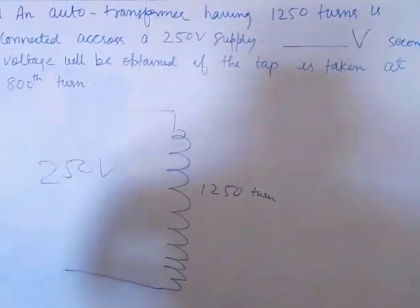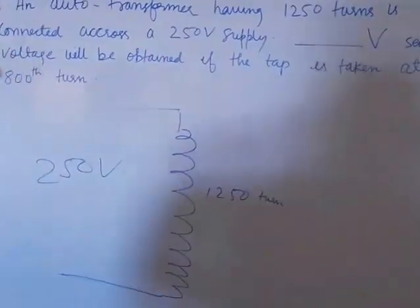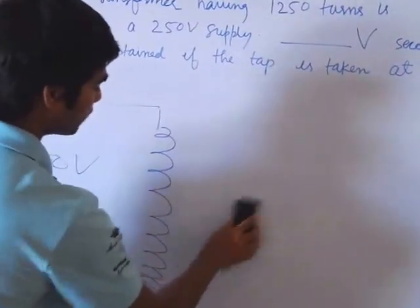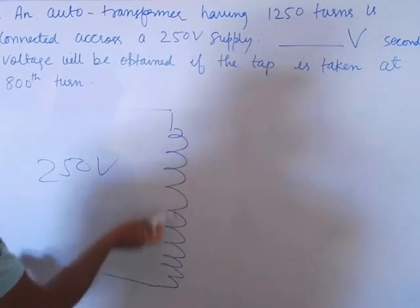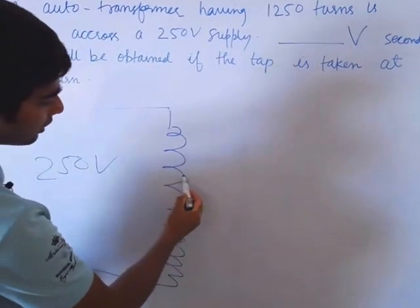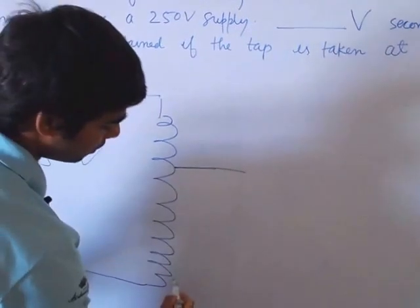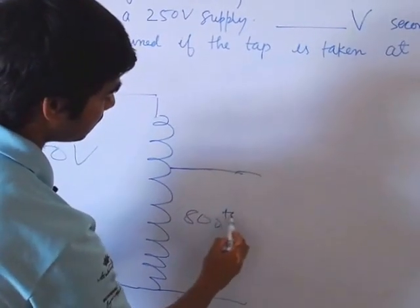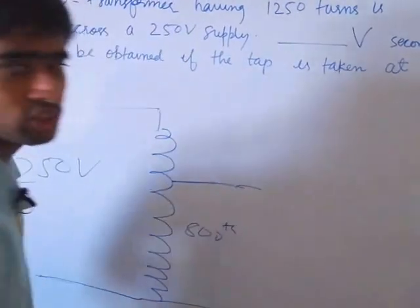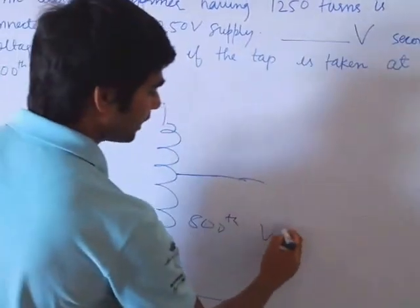Now the secondary tap. The total turn is 1250, but the tap is here to remove the secondary terminal at 800 turn tap. So how much voltage is obtained here? The secondary voltage we have to get out.